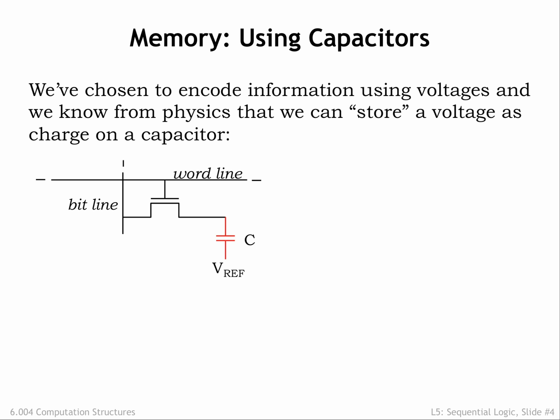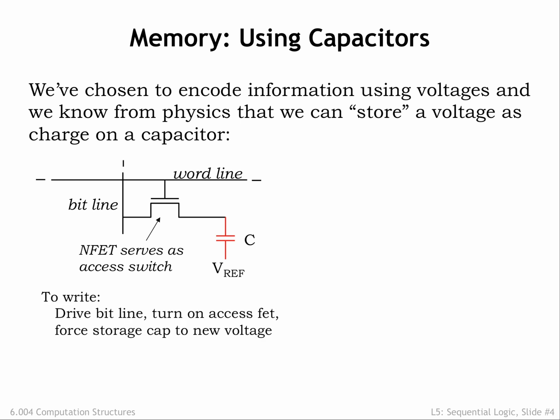Here's how a capacitor-based memory device might work. One terminal of the capacitor is hooked to some stable reference voltage. We'll use an NFET switch to connect the other plate of the capacitor to a wire called the bitline. The gate of the NFET switch is connected to a wire called the wordline. To write a bit of information into our memory device, drive the bitline to the desired voltage, then set the wordline HIGH, turning on the NFET switch. The capacitor will charge or discharge until it has the same voltage as the bitline. Then set the wordline LOW, turning off the NFET switch and isolating the capacitor's charge on the internal plate.